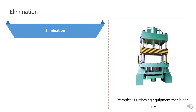The first level is Elimination. Elimination is the process of removing the hazard from the workplace. It is the most effective way to control a risk because the hazard is no longer present. It is the preferred way to control a hazard and should be used whenever possible. An example of an Elimination control method is purchasing equipment that is not noisy.